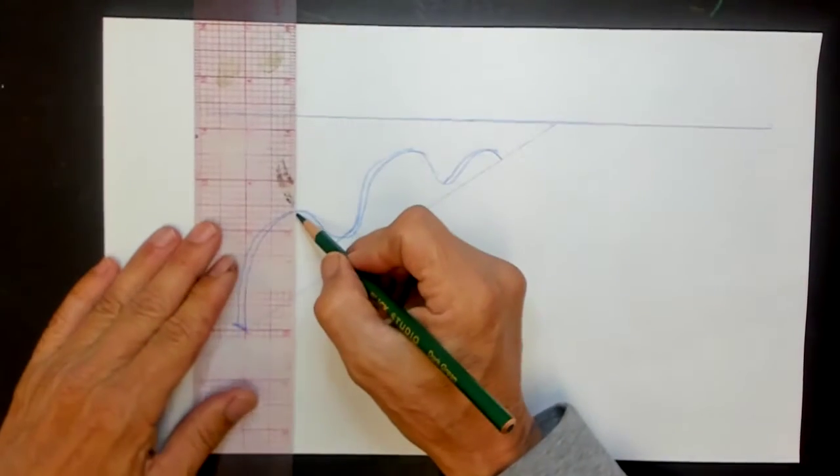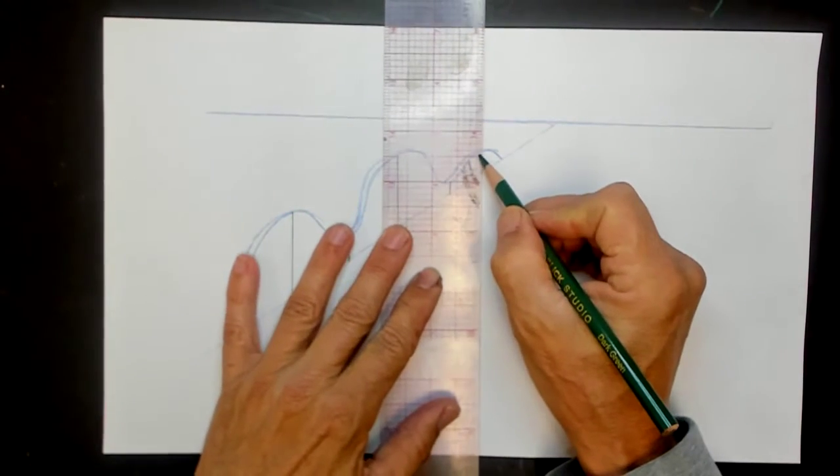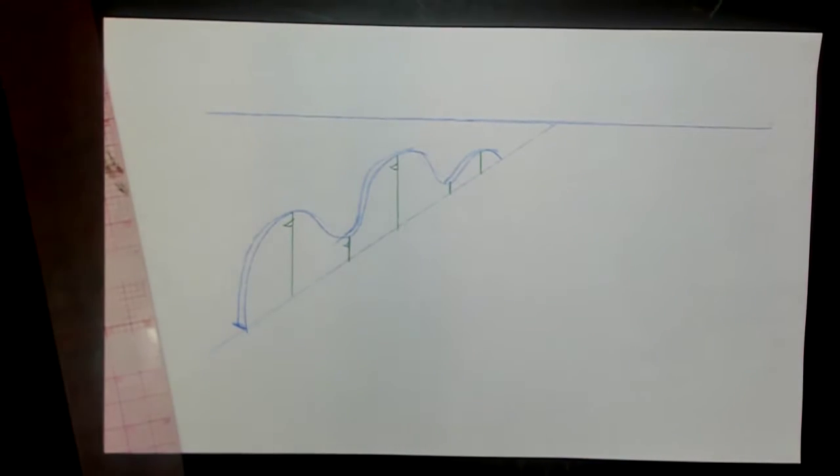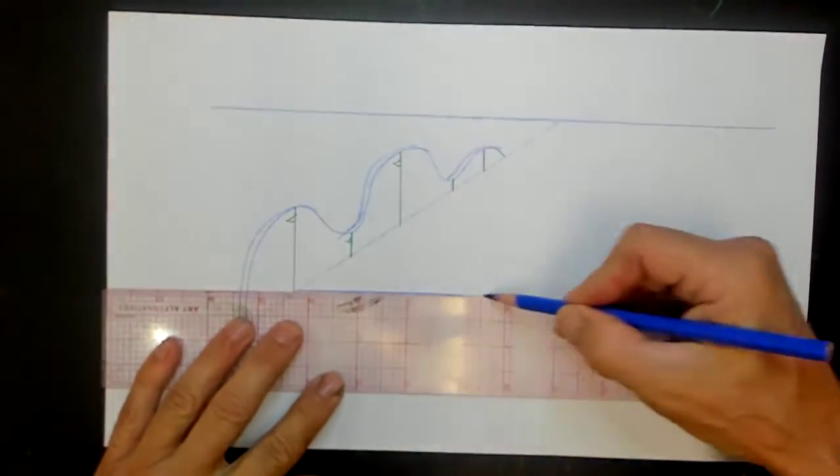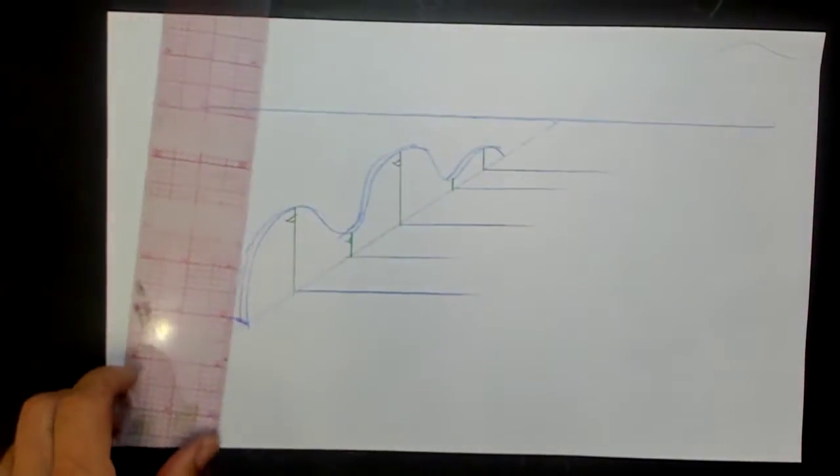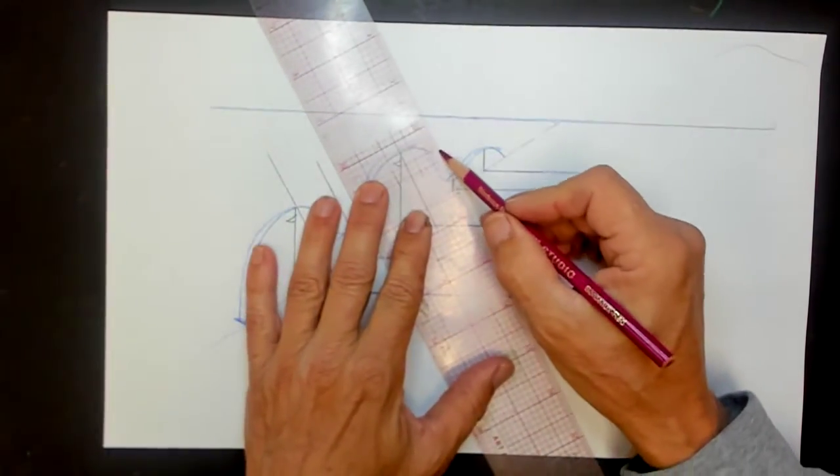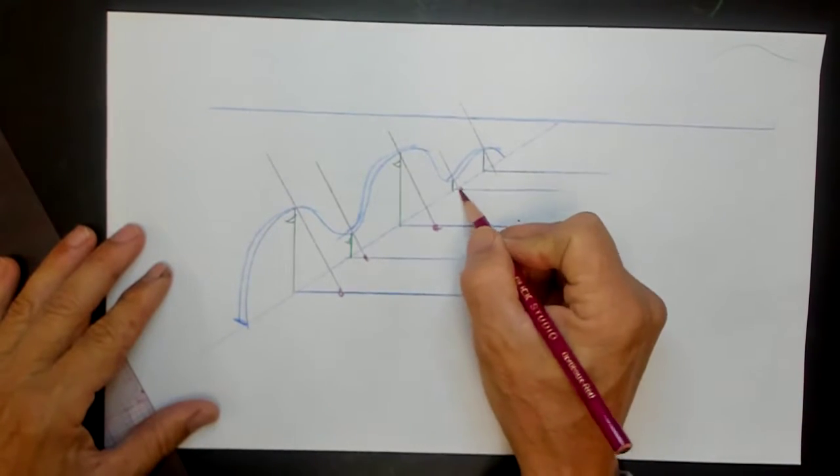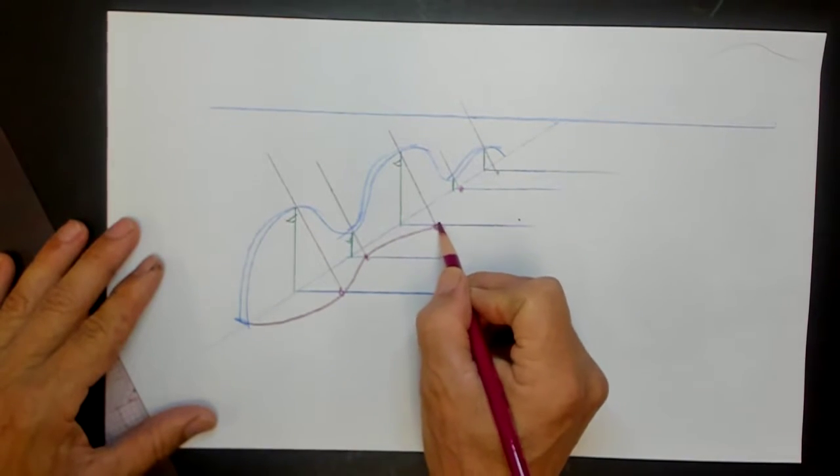What you do is just drop flagpoles down from strategic points. I'm just doing it from the very top and from the very lowest points, and from each of those you draw a ground line. And from the top of the flagpoles you do a light angle. And then you get these points.